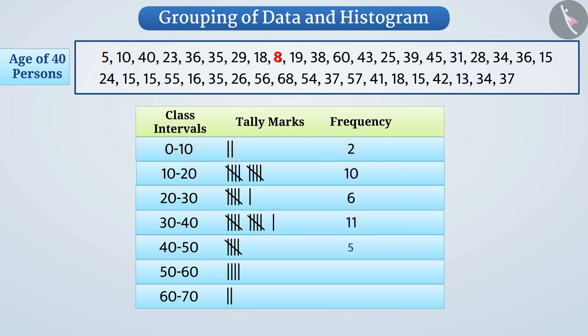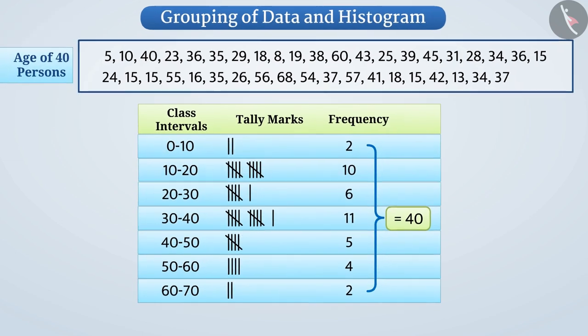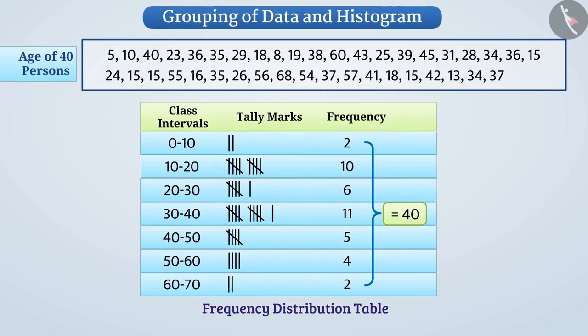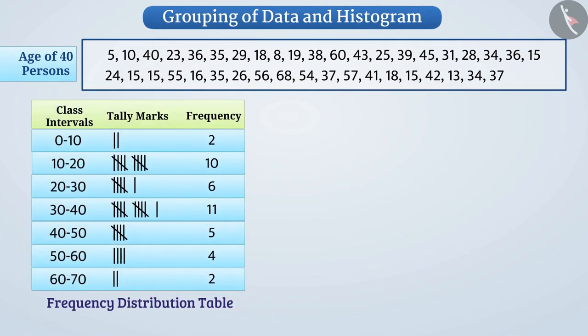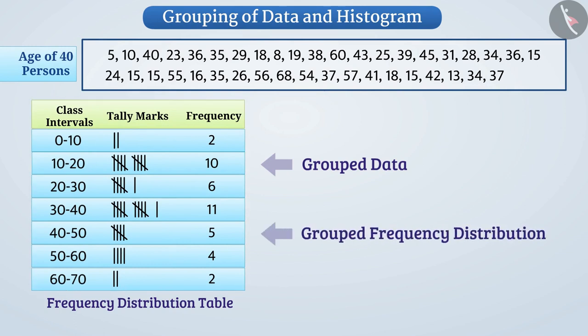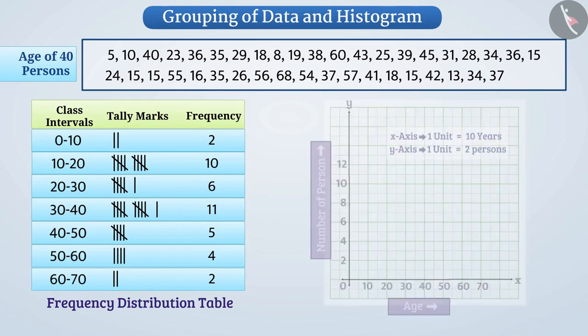Similarly, you can write the frequency of all these class intervals in this way. You can see that the sum of the frequencies of all class intervals is 40, which is equal to the number of observations. Thus, this table is completed. This is a frequency distribution table. Since we have classified the data presented, we now call them grouped data and the obtained distribution is called a grouped frequency distribution. From this table, we can draw a graph as follows.